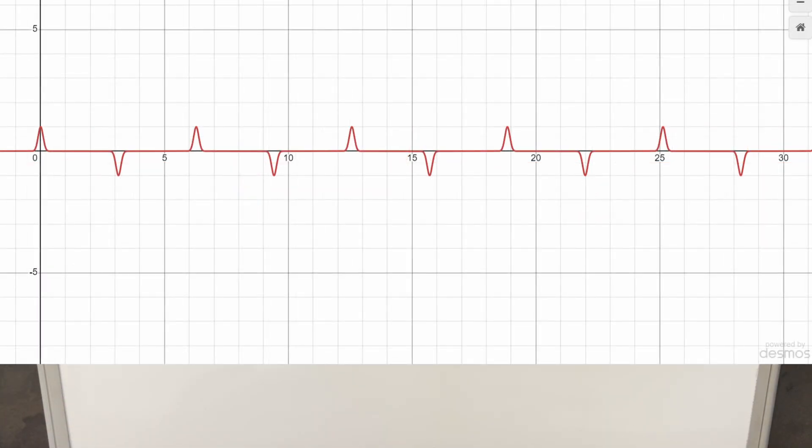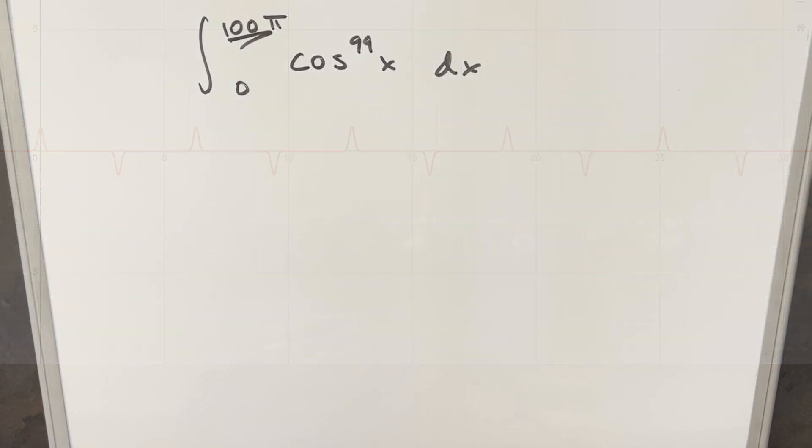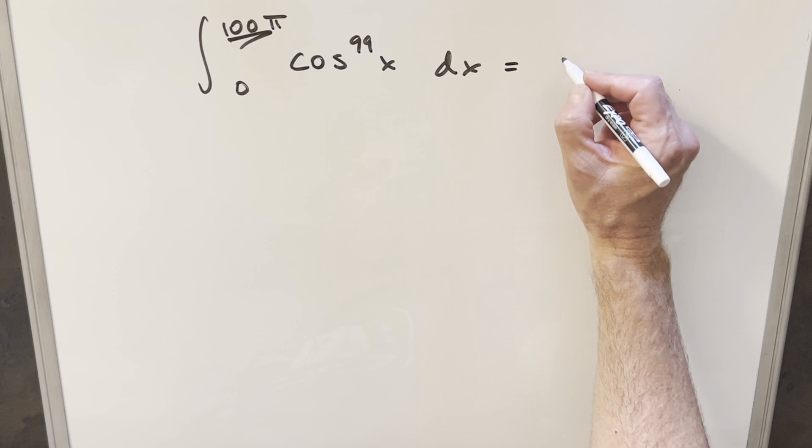We've got our upper bound of 100 pi, but it's not going to matter if all these different areas from 0 to 2 pi, 2 pi to 4 pi, 4 pi to 6 pi, if they're all 0, this whole integral is just going to be 0.